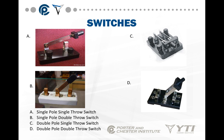We start off with the most basic symbols and devices of all — the switch. Diagram picture A is a single pole, single throw switch. Picture B is a single pole, double throw switch. You'll see the difference.